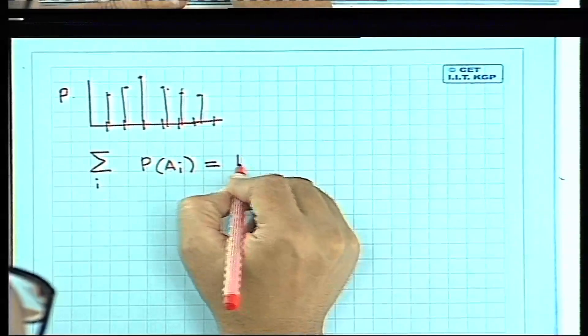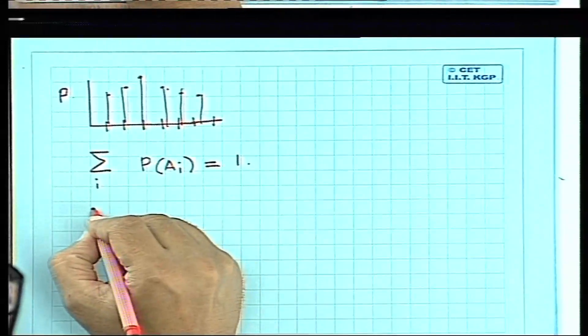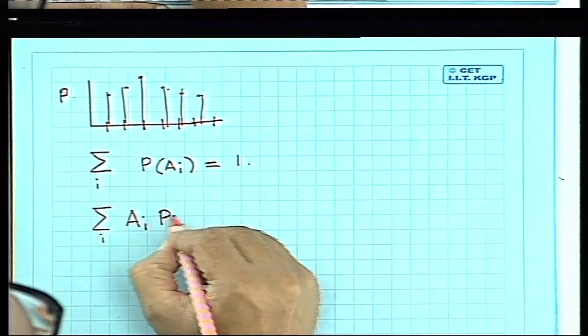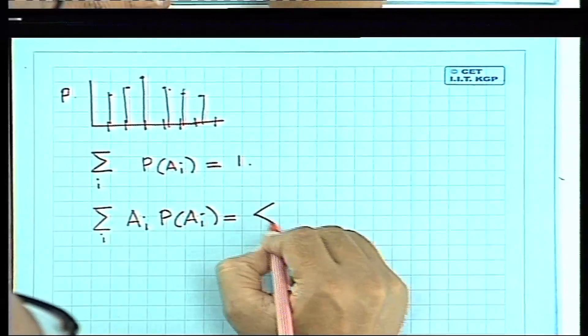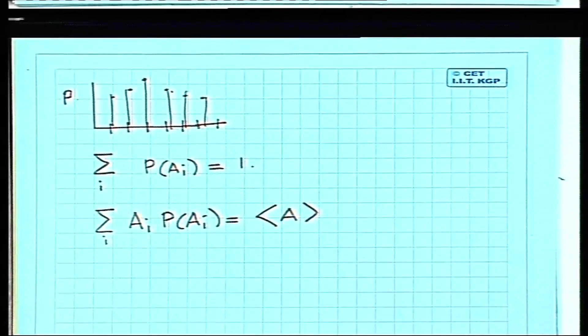To find the mean age, we take each possible value of age multiplied by the probability of getting that age and sum over all values. This gives the expectation value of age. If you randomly choose a person, you would expect them to have this mean age — this is what we call the expectation value.